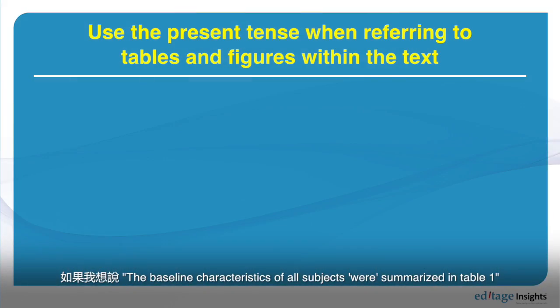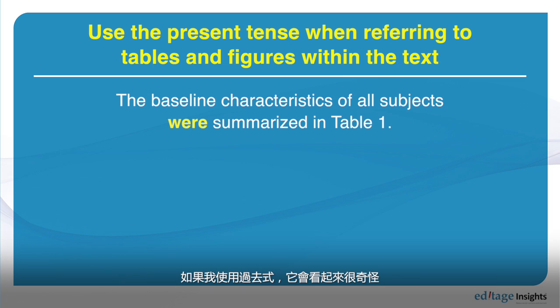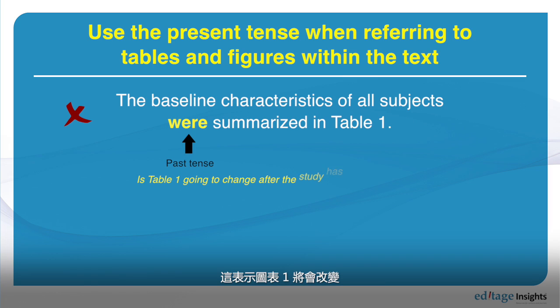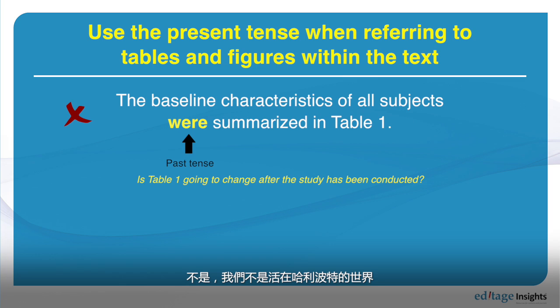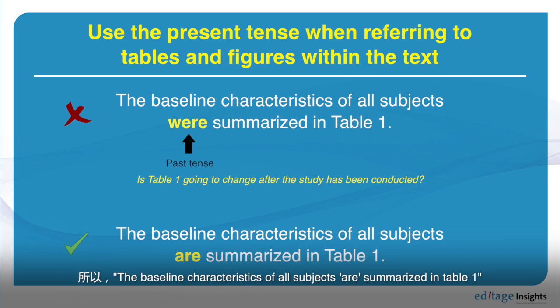If I were to say 'the baseline characteristics of all subjects were summarized in table one,' using the past tense there would look strange. That would mean that possibly table one is going to change. But we don't live in Harry Potter's world, so the correct form is: 'the baseline characteristics of all subjects are summarized in table one.'